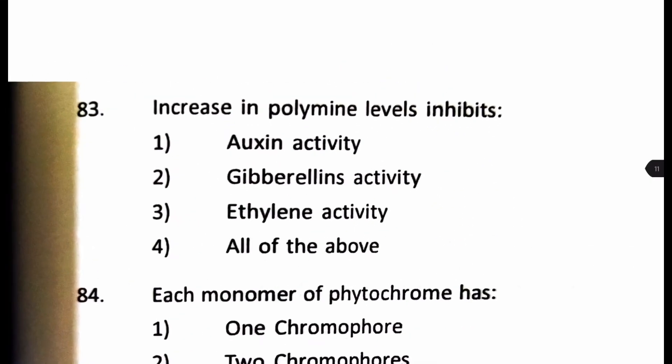Question number 83. Increase in the polyamine level inhibits. Is it auxin activity, gibberellin activity, ethylene activity or all of the above. We know that polyamine levels affect all the plant hormones present. But most importantly, it is an anti-senescence hormone. So, it inhibits the ethylene activity which actually promotes senescence. So, our answer here is number three. Next question.